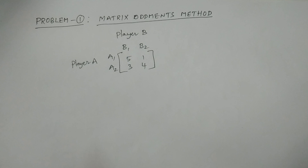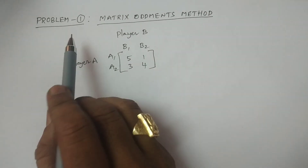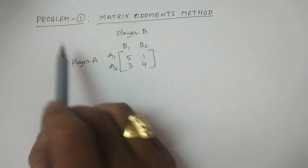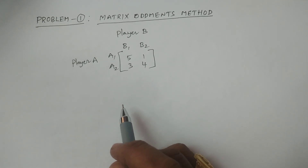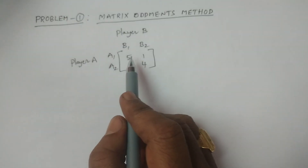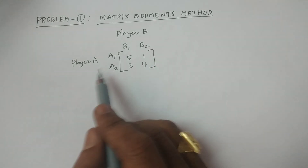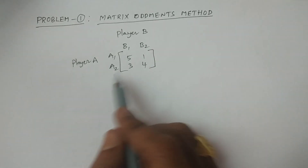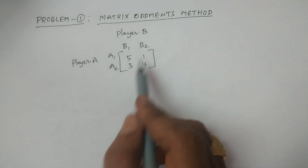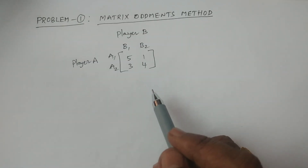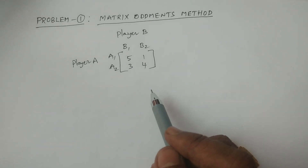In this class, I will explain a problem in matrix augment methods. This is the problem. Player A and Player B have two strategies. The payoff matrix is [5,1;3,4]. We will check this problem.